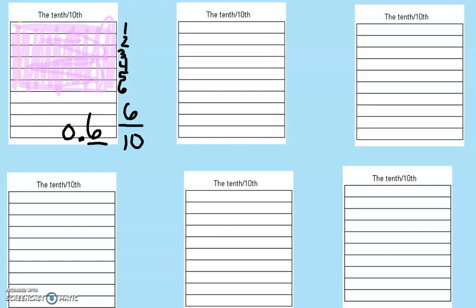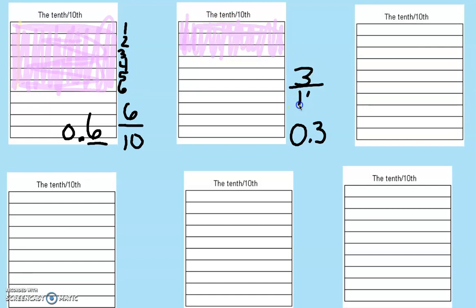Now I'm going to write the decimal 0.3 and I want you to think: how many rods should I color in to make 0.3? I need to color in one tenth, two tenths, three tenths — so three rods equals 0.3. We can write that as the fraction three tenths and as the decimal 0.3.